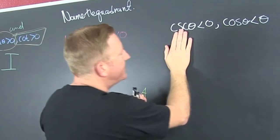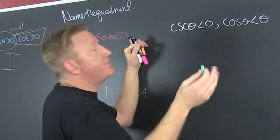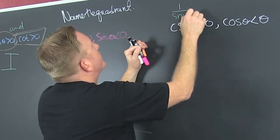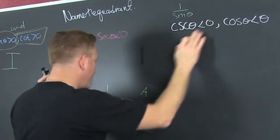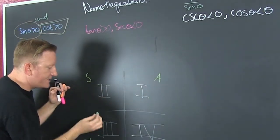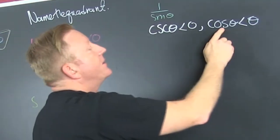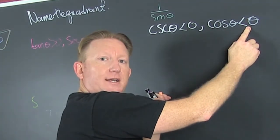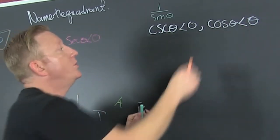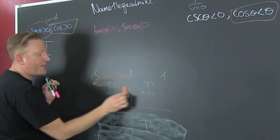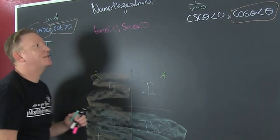We need cosecant less than zero. The cosecant has the same sign as the sine, because cosecant is one over sine. So sine is negative — sine is y, so sine is negative in the bottom half. Where the sine is negative, the cosecant is negative. Now the cosine is x, and we need the cosine to be negative. Cosine is negative on the left side. Where do they overlap? They overlap in quadrant three.